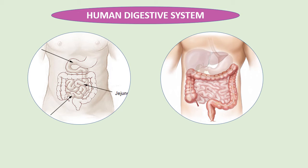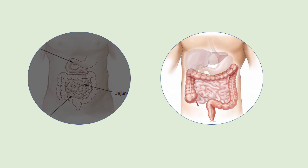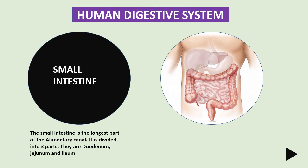The small intestine is made up of three segments: the duodenum, jejunum, and ileum. The liver and pancreas secrete juices and enzymes into the duodenum.